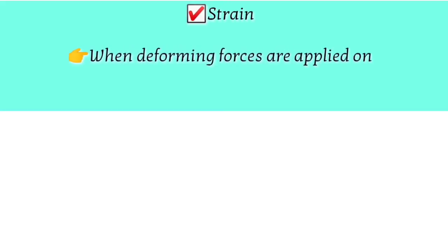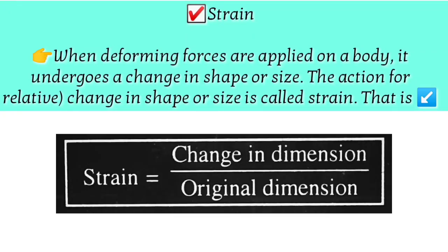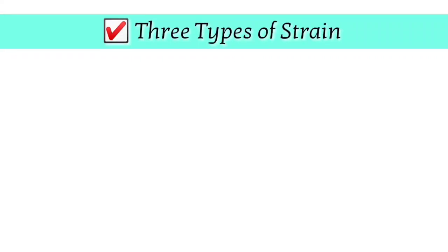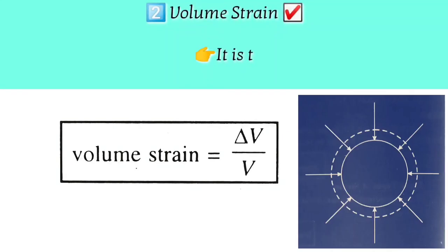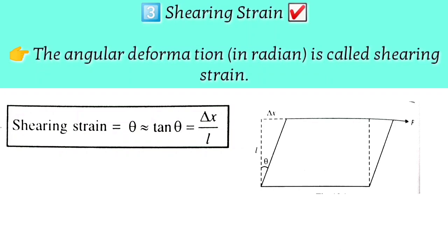When the deforming force is applied on a body, it undergoes a change in shape and size. The ratio of the relative change in dimension to the original dimension is called strain — that is, change in dimension divided by original dimension. There are three types of strain: longitudinal (or linear) strain, which is change in length by original length; volumetric strain, which is change in volume by original volume; and shearing strain, which is delta x divided by L.